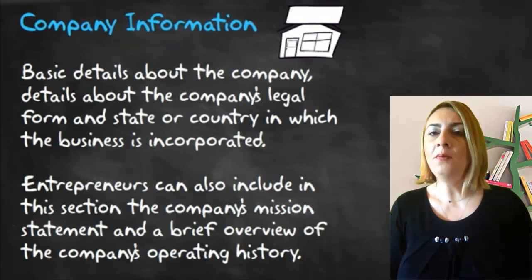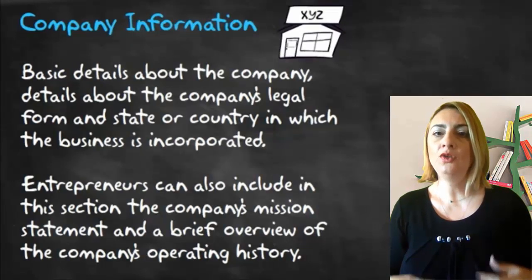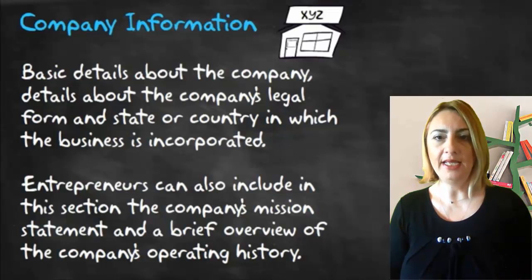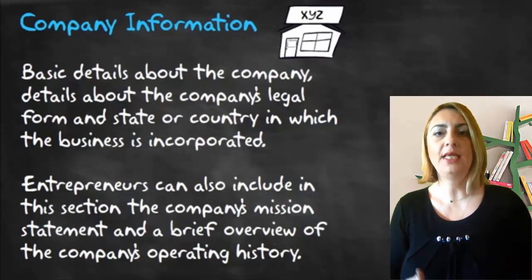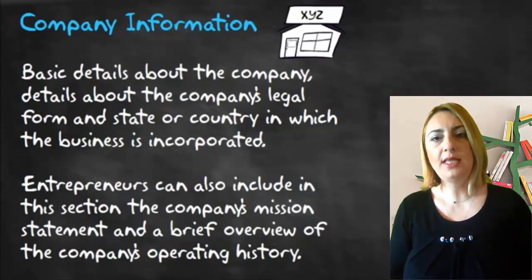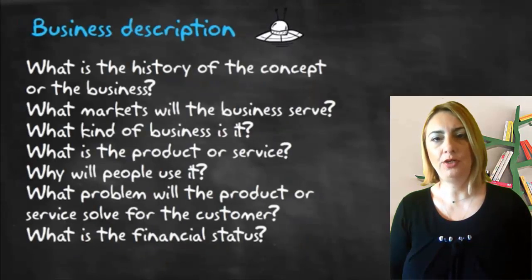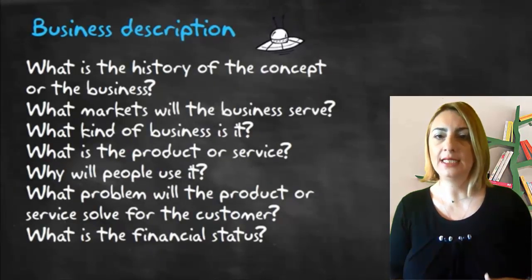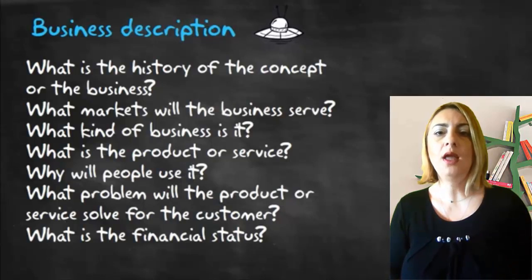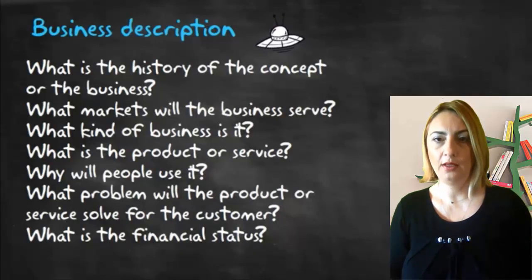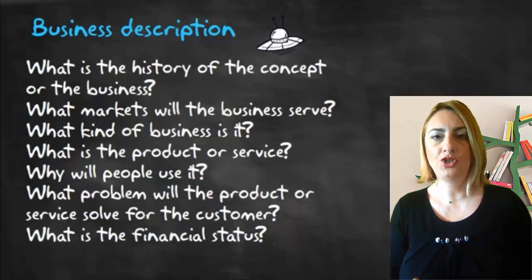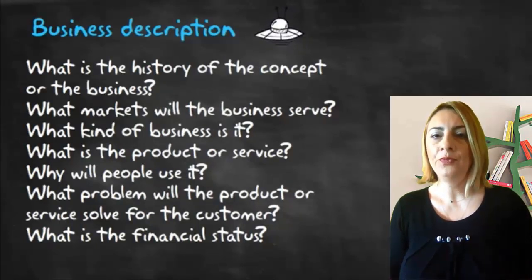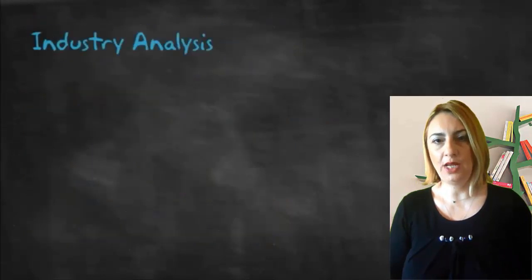The company information section includes basic details about the company such as mailing address, phone number, website, email address, and any other contact information. It also includes details about the company's legal form and state or country. Entrepreneurs can also include the company's mission statement and a brief overview of the company's operating history.